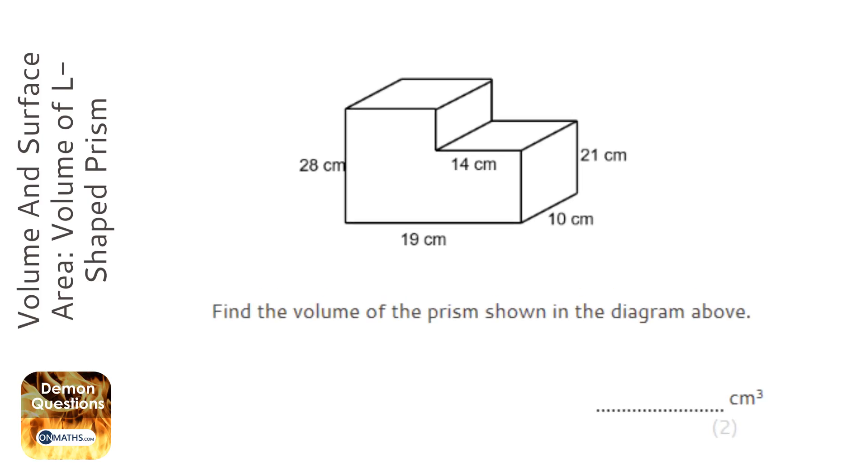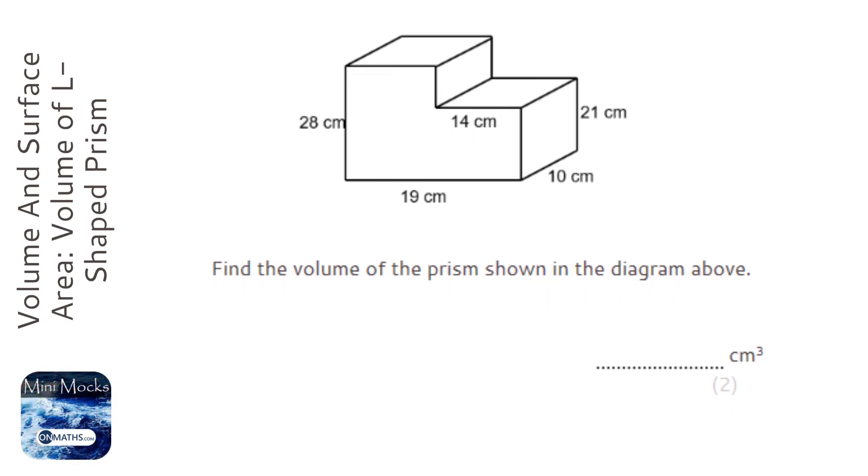The formula for the volume of a prism is cross-sectional area times the length. Here we've got quite a weird shape - a compound shape, which means it's made up of two shapes put together or two rectangles. It doesn't really matter how you split these up. I'm going to split it up by